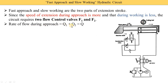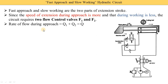Rate of flow during approach is Q1 plus Q2, which equals Q total. Between the directional control valve and the hydraulic cylinder, flow control valves F1 and F2, and check valve C are installed. F1 is switched on or off by a 2/2 directional control valve. During approach, both F1 and F2 are open, so oil is supplied with quantity Q1 from F1 and Q2 from F2, and their sum Q1 plus Q2 equals Q.